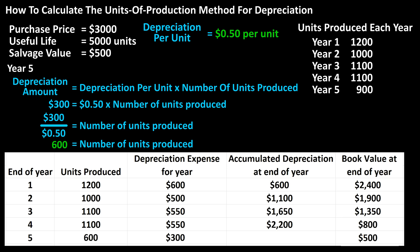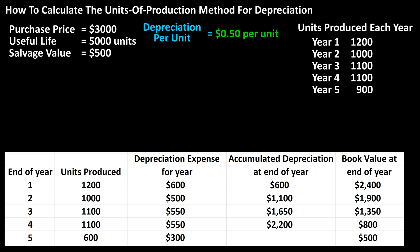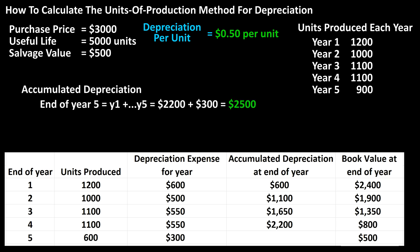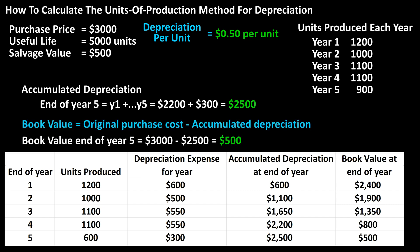Now we'll go back to the depreciation schedule and make the changes. For units produced, we have 600. The depreciation expense is $300. The accumulated depreciation for years one through five now equals $2,500. The book value is $3,000 minus $2,500, which equals $500. Our depreciation schedule for the units of production method is complete.